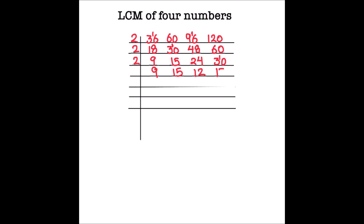Now 9 and 15 are odd numbers, but 12 is still even. Since 12 is also divisible by 3, we use 3 to divide: 9 ÷ 3 = 3, 15 ÷ 3 = 5, and 12 ÷ 3 = 4.